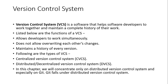A version control system is software that helps software developers work together and maintain a complete history of their work. It is very useful — one developer's changes and multiple developers' changes are all tracked.